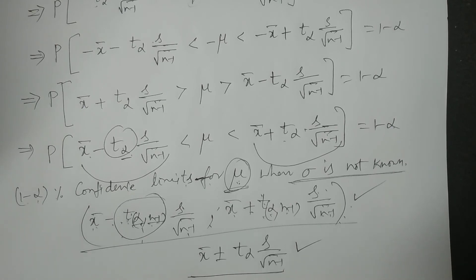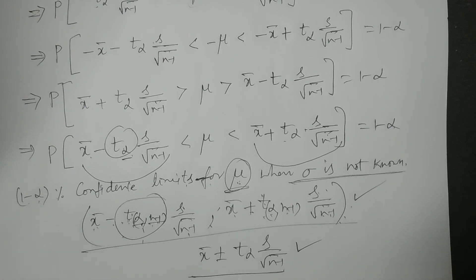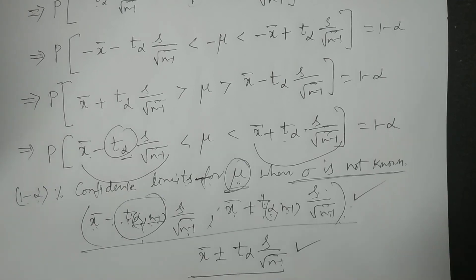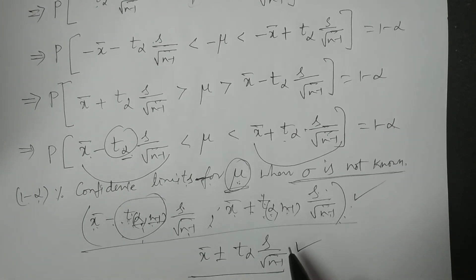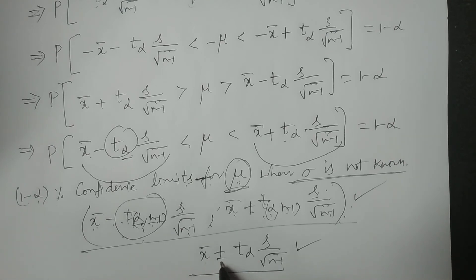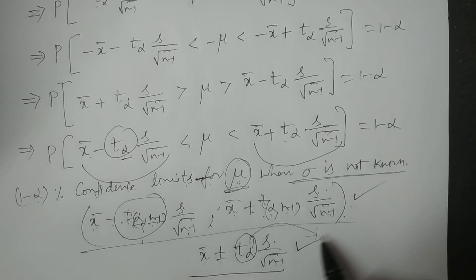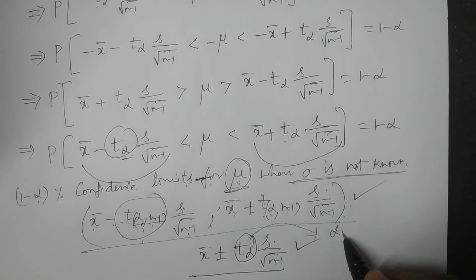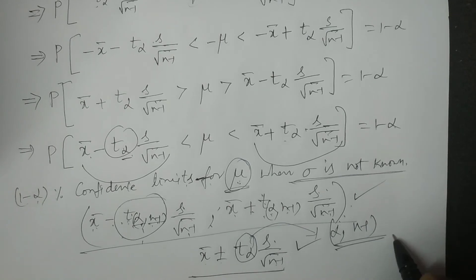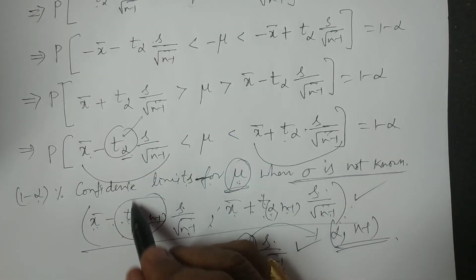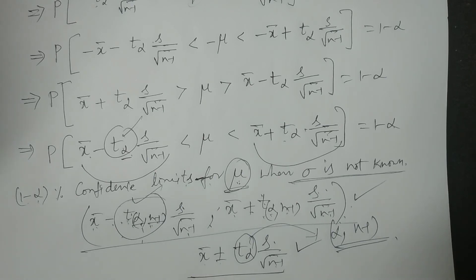This is the calculation for obtaining confidence intervals for the population mean μ when σ is not known in a normal population. The confidence limits depend on T distribution: x̄ ± Tα · S/√(n−1), where Tα depends on α level of significance and n−1 degrees of freedom. Thank you very much.